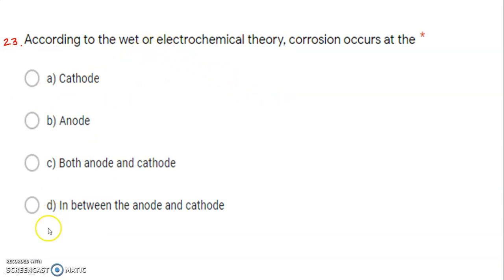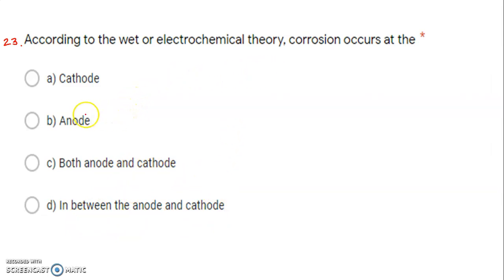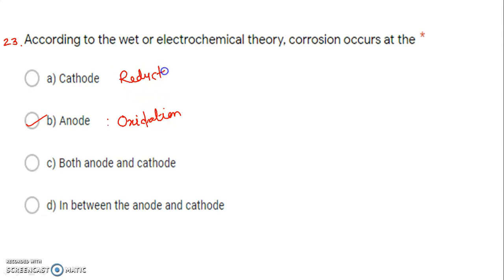Next question: according to the electrochemical theory, corrosion occurs at — cathode, anode, both, or in between? According to electrochemical theory, corrosion always occurs at the anode. At the anode, oxidation takes place, and at the cathode, reduction takes place. The cathode is always protected whereas the anode is always corroded. So the correct answer is Option B: anode.